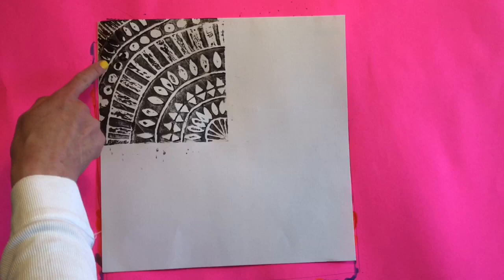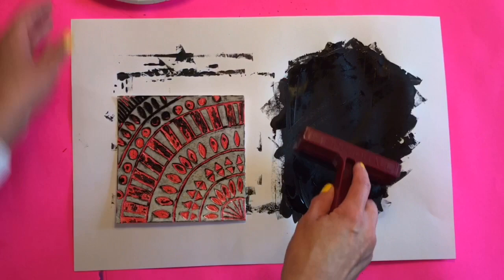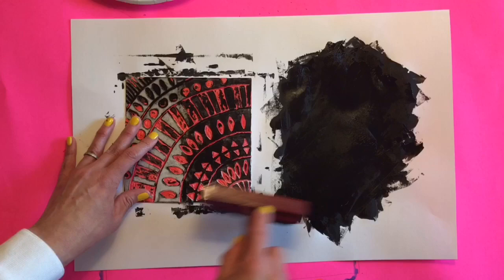Then you need to roll your brayer into the paint again. Then into the paper again. Then onto your printing plate again. And print repeating these steps as you rotate your printing plate, making sure you always have your arrow pointing to the center. You'll need to print like this four times in total to complete the symmetrical radial design print, filling in the entire white paper to complete the design.